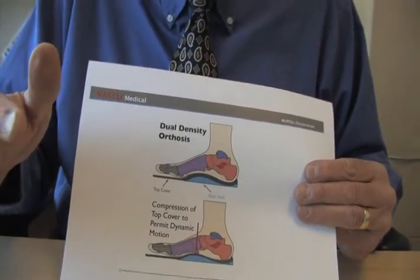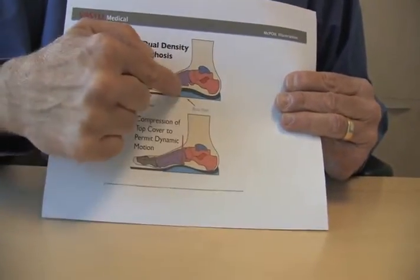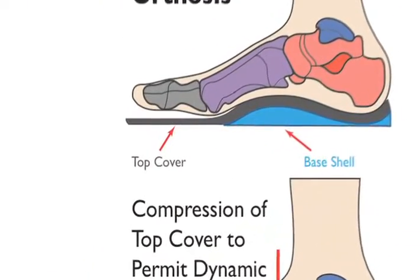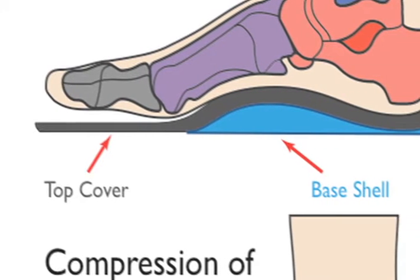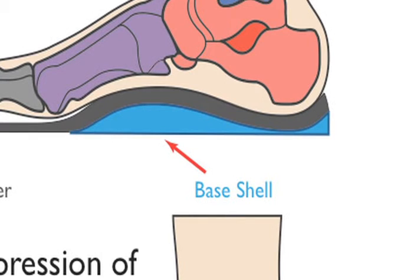For the last 30 years, I've used an approach that I term a dual density orthotic model. The concept of dual density is to use two different densities of material: a top cover which has some compressibility to permit normal pronation required for activity to occur, and the blue base shell material to block excessive pronation and control the amount of tissue stress and deformation — in other words, prevent the tissues from moving into the micro failure zone.